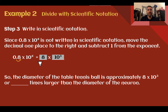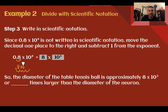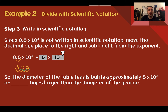Since 0.8 is not in proper scientific notation form, we need to move the decimal one place to the right, which means we subtract 1 from the exponent. So the result is 8 times 10 to the 3rd power. To verify: 0.8 times 10 to the 4 means moving 4 places gives 8,000, and 8 times 10 to the 3rd also gives 8,000. So the diameter of the table tennis ball is approximately 8 times 10 to the 3rd, or 8,000 times larger than the diameter of the neuron.